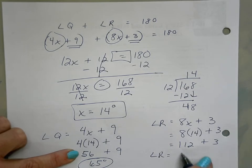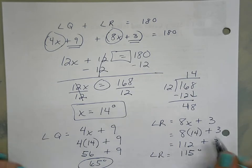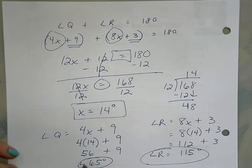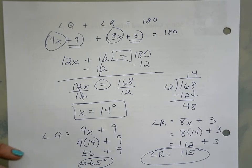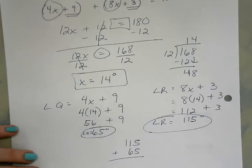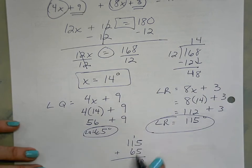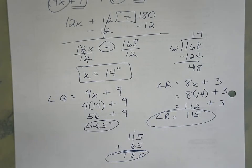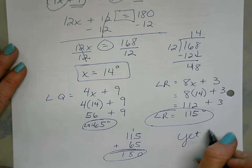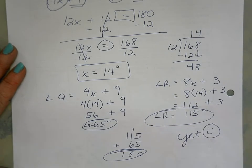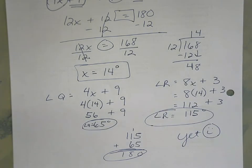So angle R is 115 degrees. Just to be sure, this is my angle Q. If I add up 115 and 65, do I get 180? Let's see - very good! We're gonna do a lot more problems similar to these, so if you don't get it, you don't get it yet, but you will. Just take it one step at a time. You're doing great work. I look forward to doing more of these problems with you. Have a great day, bye!